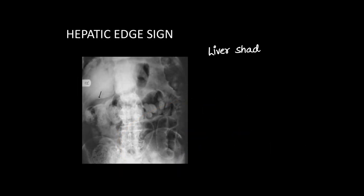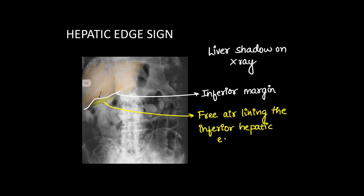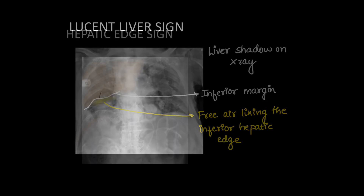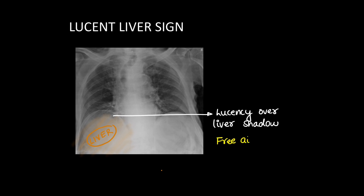Next, the hepatic edge sign: as the name suggests, the hepatic or liver edge is visualized. Air collecting beneath the inferior aspect of the liver makes the inferior margin of the liver well visualized, and the entire liver shadow can be seen on erect x-ray abdomen. Additionally, if air is collected anterior to the liver, its opacity is reduced on x-ray and lucency over the liver shadow is seen.